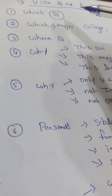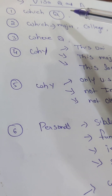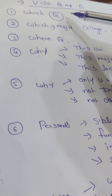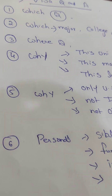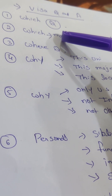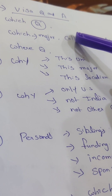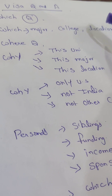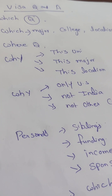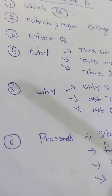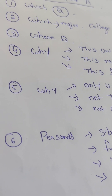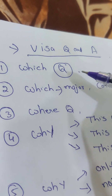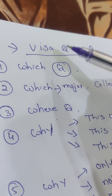The first basic question you will encounter is a 'which' question — which university, which course, which major, and which college. The second question triggered is also a 'which' question consisting of which major course, which locality, which state, and which city. The third question is a 'where' question — where is this college, where is this university, what is the location of the university.